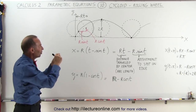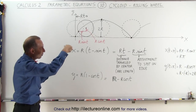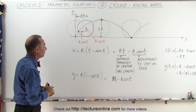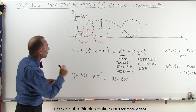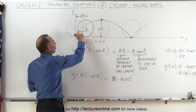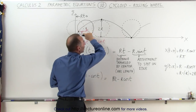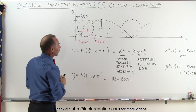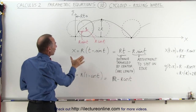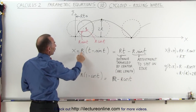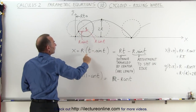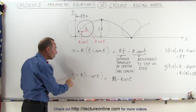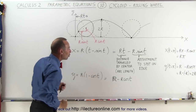This curve is called a cycloid. It keeps track of a position on the edge of a circle as it's rolling, like the tire of a car. If you want to express the xy position on that wheel as the wheel is rotating or rolling along the flat horizontal road, the equations are: x equals r — r being the radius of the wheel — times t minus the sine of t. And for the y position, it's r times one minus the cosine of t.